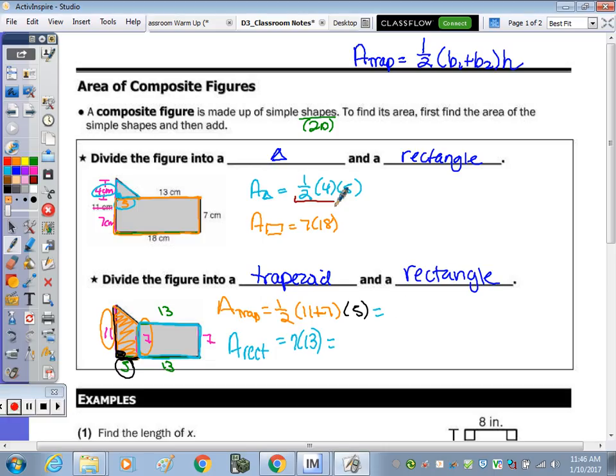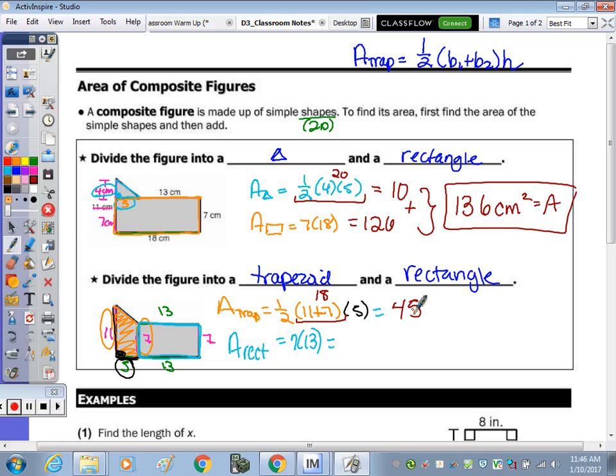At the top, 1 half of 4 by 5, half of 20 is 10. And then 7 times 18 is 126. So together it would be 136 square centimeters for the area. And we should get the same thing below. So 11 plus 7 is 18, half of 18 is 9, and then 9 times 5 is 45. 7 times 13 is 91. When we add those two together, 136, they do match. So it does check.